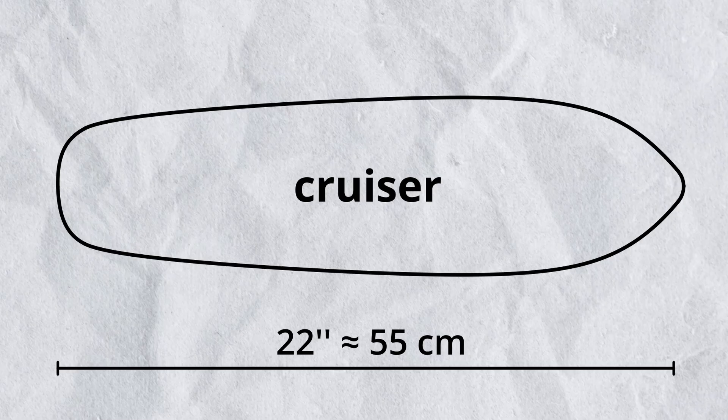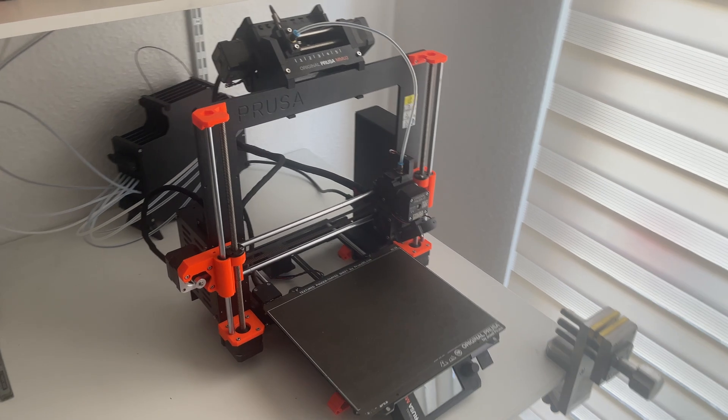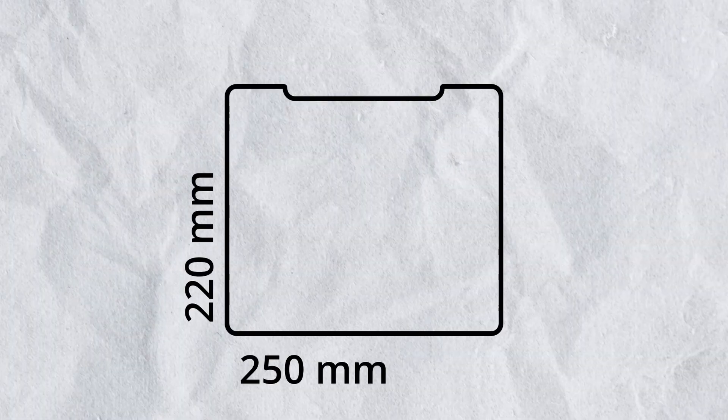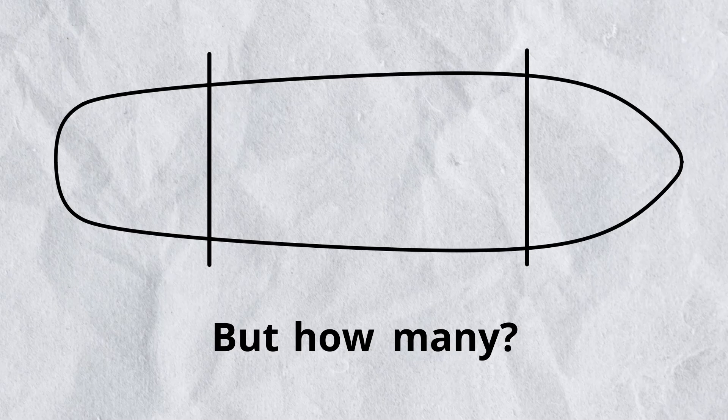I decided to go with a cruiser board. They are compact, light and perfect for the city, and about 22 inches or 55 cm long. But that is still bigger than my 3D printer's build area which is limited to only 250 x 220 mm. So that means we have to split it into several parts, but how many? And how do we make the joints strong enough?